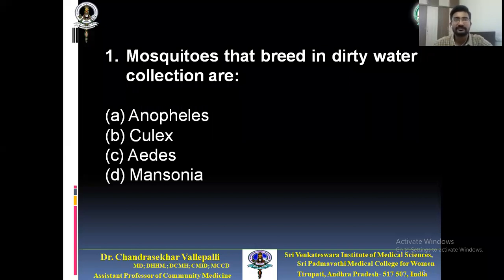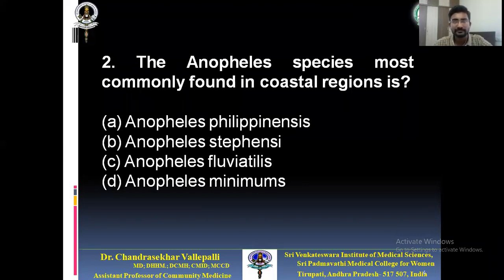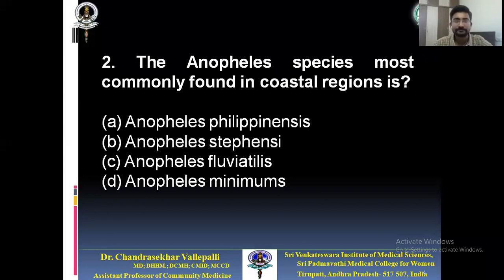We will see the answer during the lecture. Second question: the Anopheles species most commonly found in coastal regions is — A) Anopheles philippensis, B) Anopheles stephensi, C) Anopheles fluviatilis, D) Anopheles minimus. Some students are opting for Anopheles stephensi. Species vary from hilly regions, plains, or coastal regions, so this is a broad classification we'll cover during the lecture.